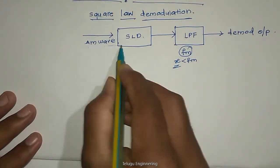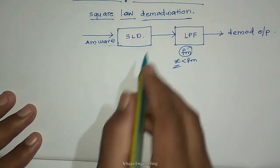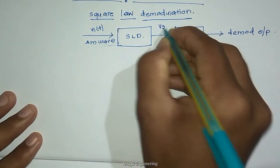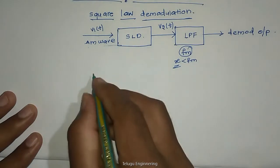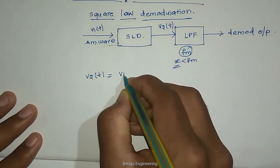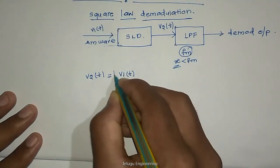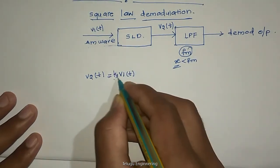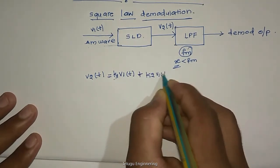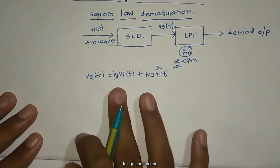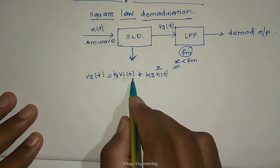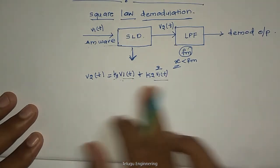So first we are passing it to the square law device. Square law device functionality, let us suppose this is V1. We are getting output of the square law device V2. Relation is V2 of T equal to, let any constant, this constant K1 plus constant 2 into V1 of T square. So it is a square law device functionality.